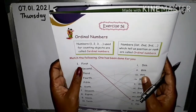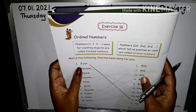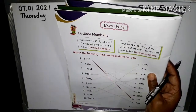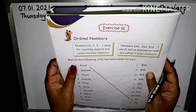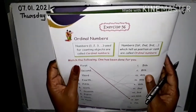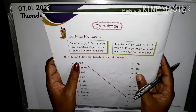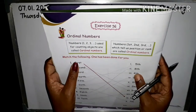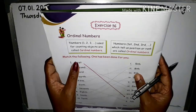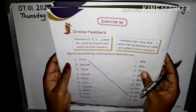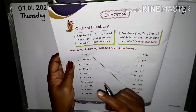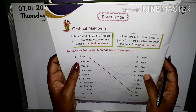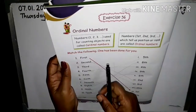Numbers like first, second, third, which tell us position or rank, are called ordinal numbers. So — cardinal or ordinal numbers. First, you see: match the following. One has been done for you.